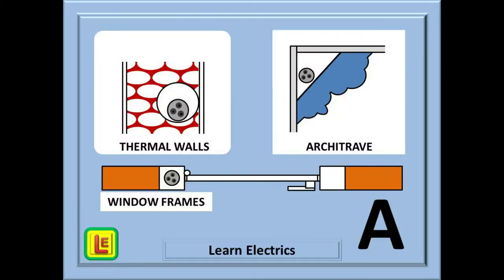Reference method A is where the cables are generally enclosed in building materials, such as insulating walls, window frames, and architraves. And it is the architrave that is the key to remembering method A. Architrave begins with the letter A. A is for architrave and other building materials. It's easy.